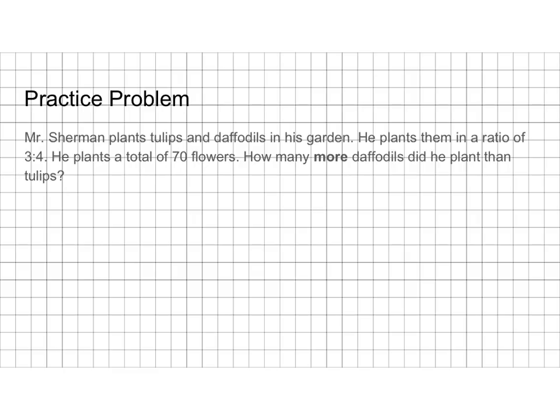Last one — this is your homework problem. Mr. Sherman plants tulips and daffodils in his garden in a ratio of 3 to 4. He plants a total of 70 flower bulbs. How many more daffodils did he plant than tulips? Take a look at example 2 if you're not sure — it's the exact same type of problem. We'll go over this in class tomorrow.